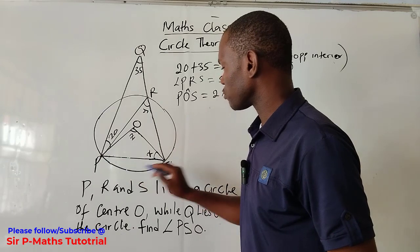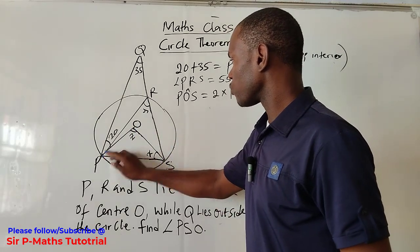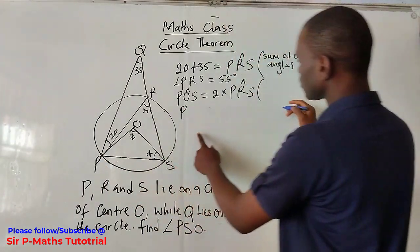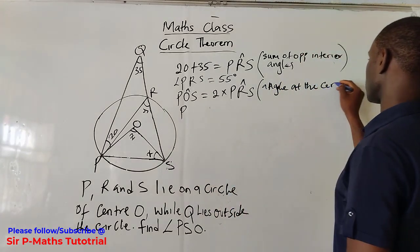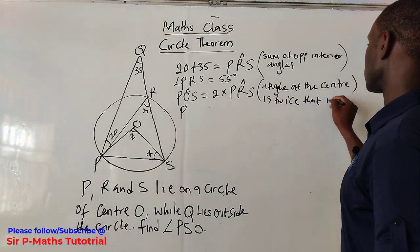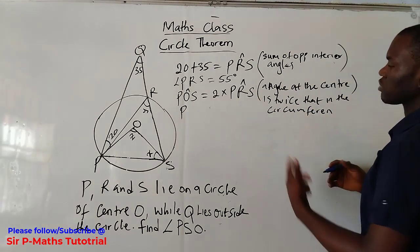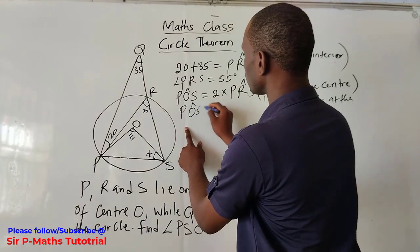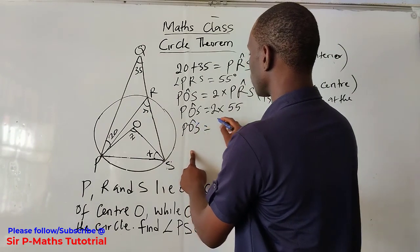Take note that both angles must subtend from the same points — this one moves from here to here, and this one also moves from here to here. The reason: angle at the center is twice the angle at the circumference. So POS equals two times 55, which means POS is equal to 110 degrees.